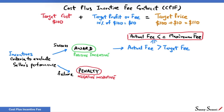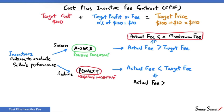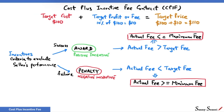A penalty will hit the seller's profit. The profit declines and the actual fee will be less than the target fee. We also have a lower limit for the actual fee, called the minimum fee. Actual fee will be more than or equal to the minimum fee — it can never be less than the minimum fee. In summary, in CPIF, constraints or limits are placed on the seller's fee: the profit cannot exceed the maximum fee and cannot be less than the minimum fee.